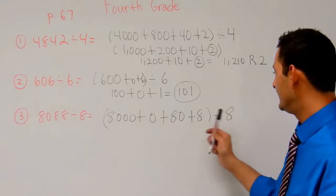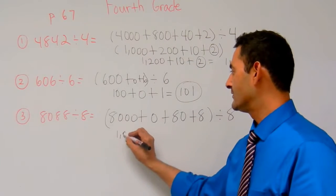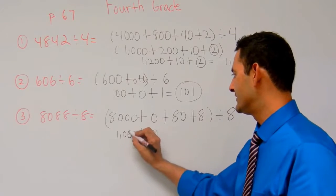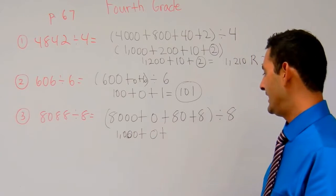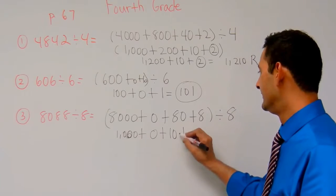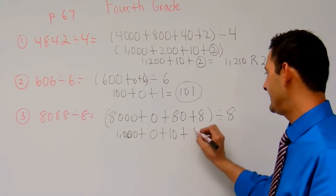So 8,000 divided by 8, that's going to be 1,000. 0 divided by 8, that's just going to be 0. Plus 80 divided by 8, that's going to be 10. Plus 8 divided by 8, that's going to be 1.